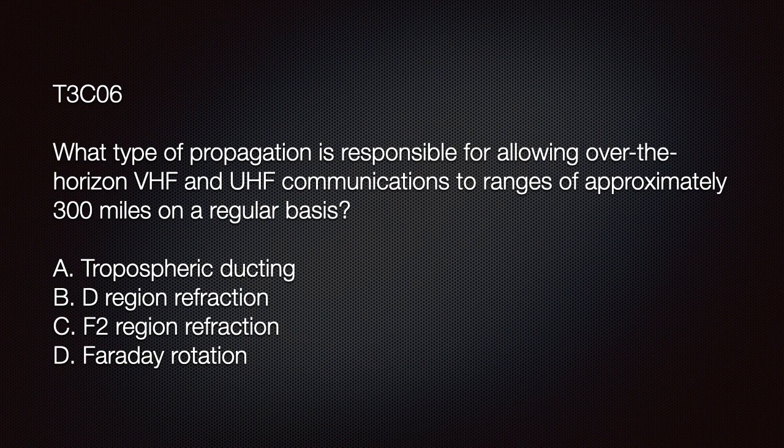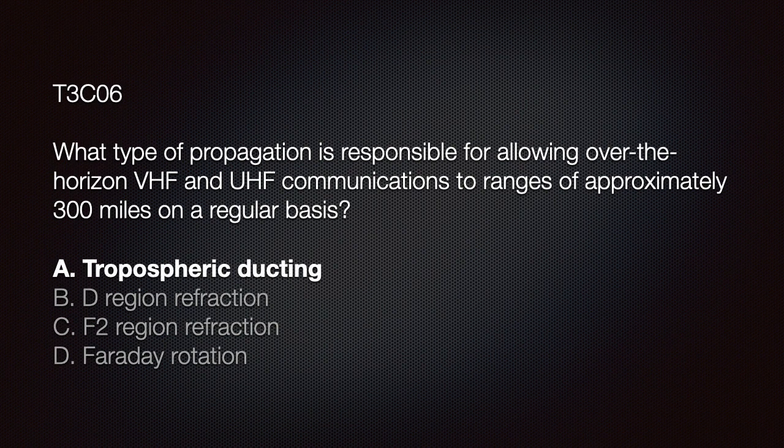On the exam you may see this question: what type of propagation is responsible for allowing over-the-horizon VHF and UHF communications to ranges of approximately 300 miles on a regular basis? A) tropospheric ducting; B) D-region refraction; C) F2-region refraction; or D) Faraday rotation. The answer is A — tropospheric ducting.